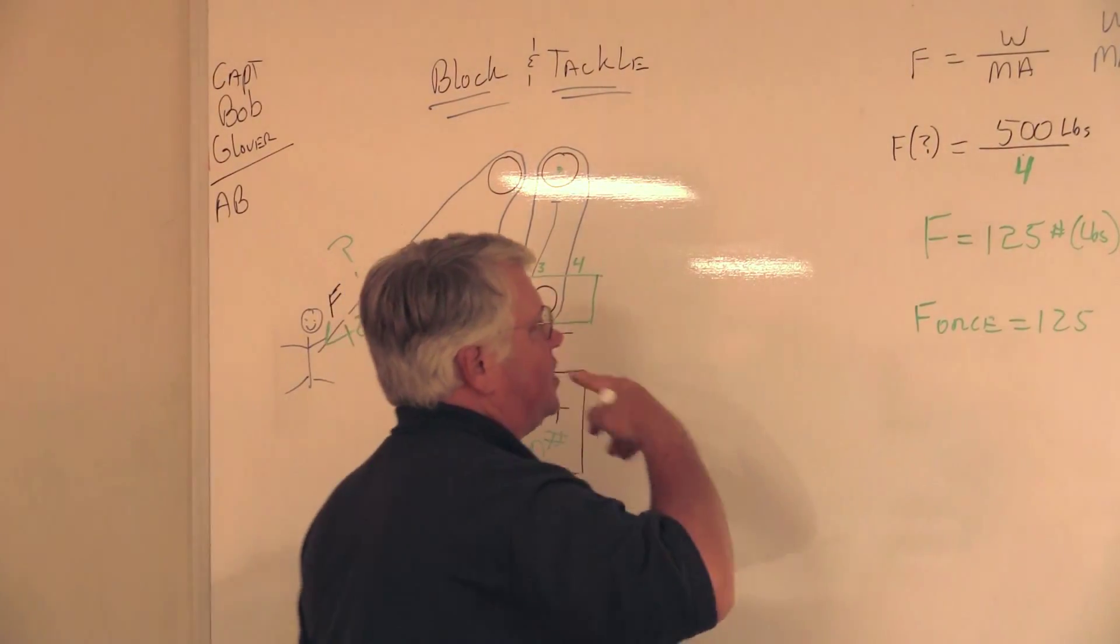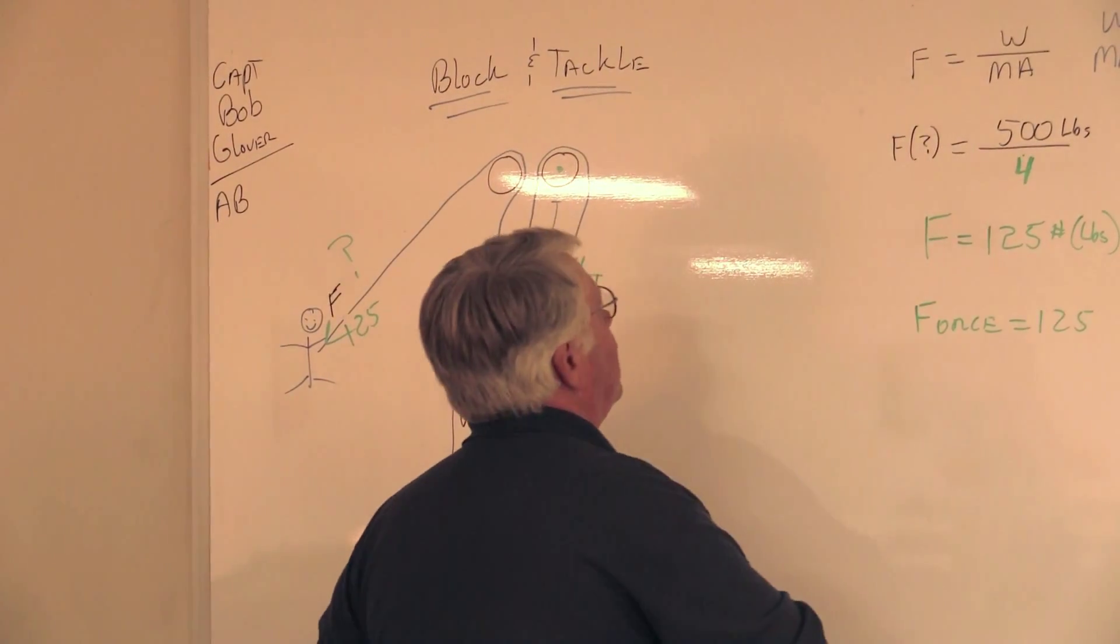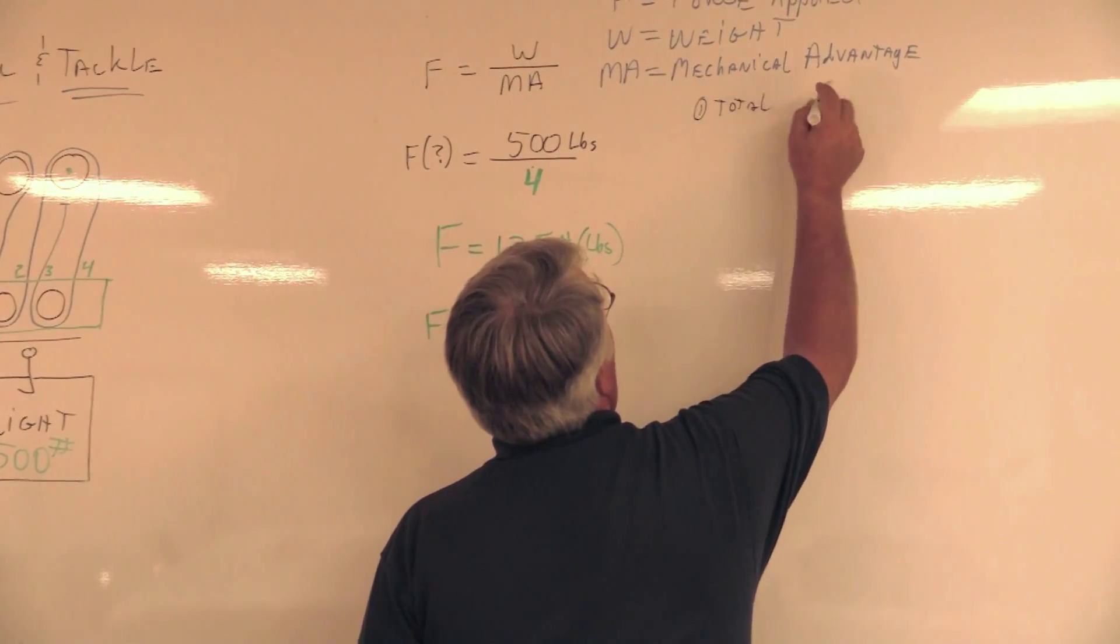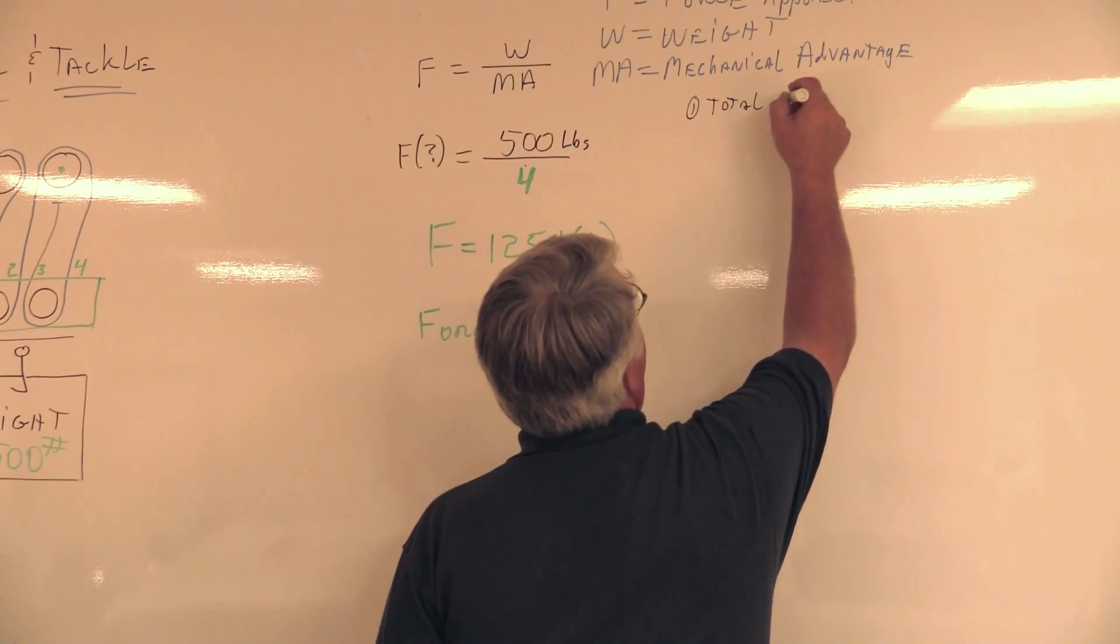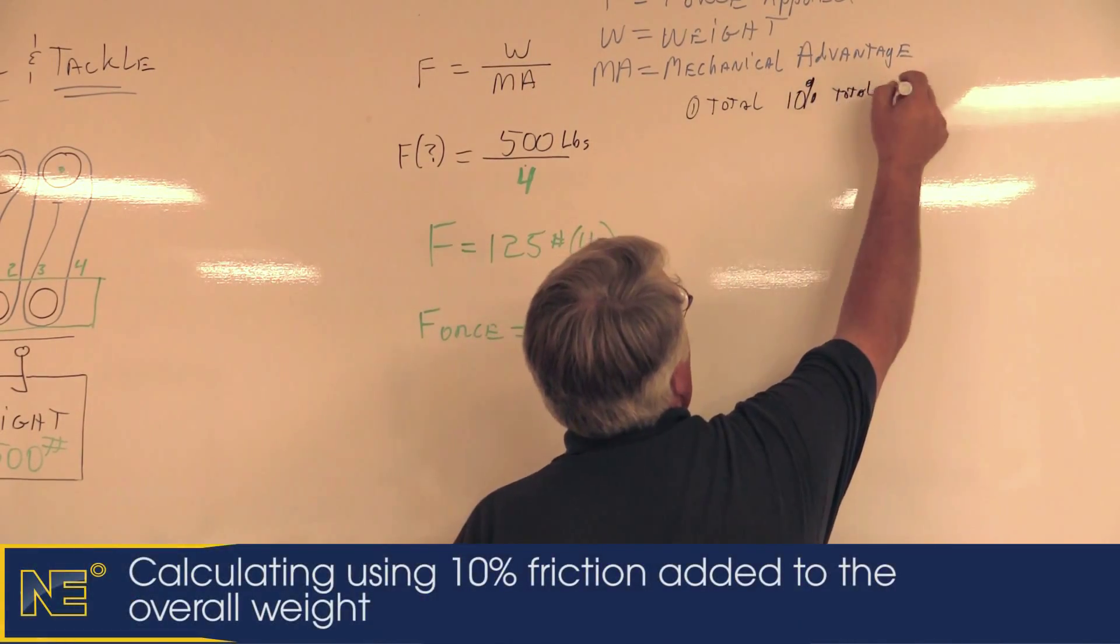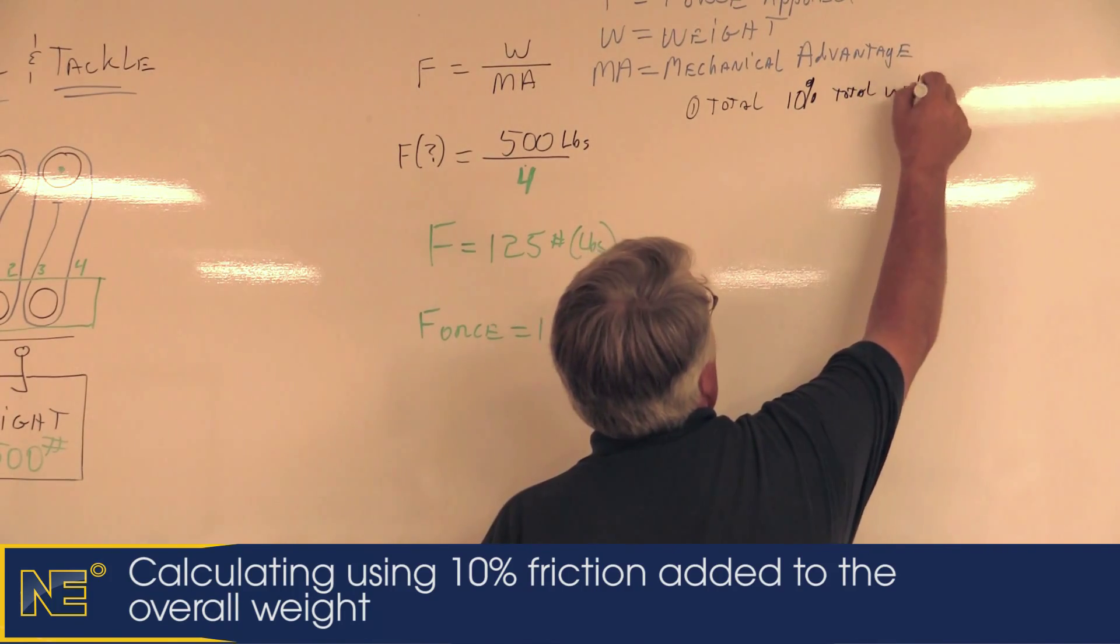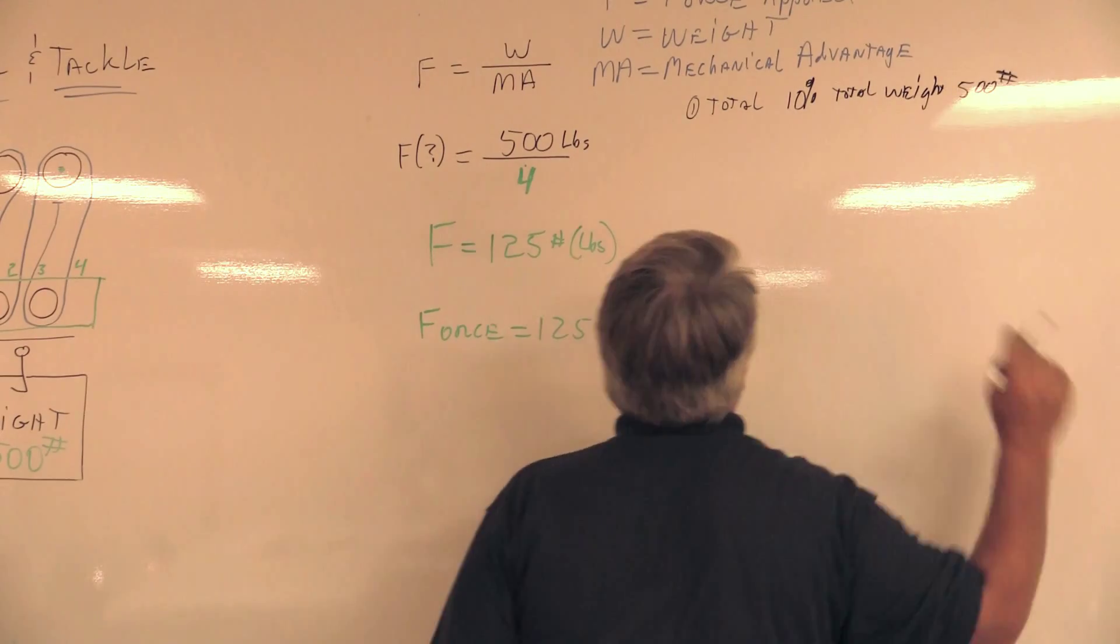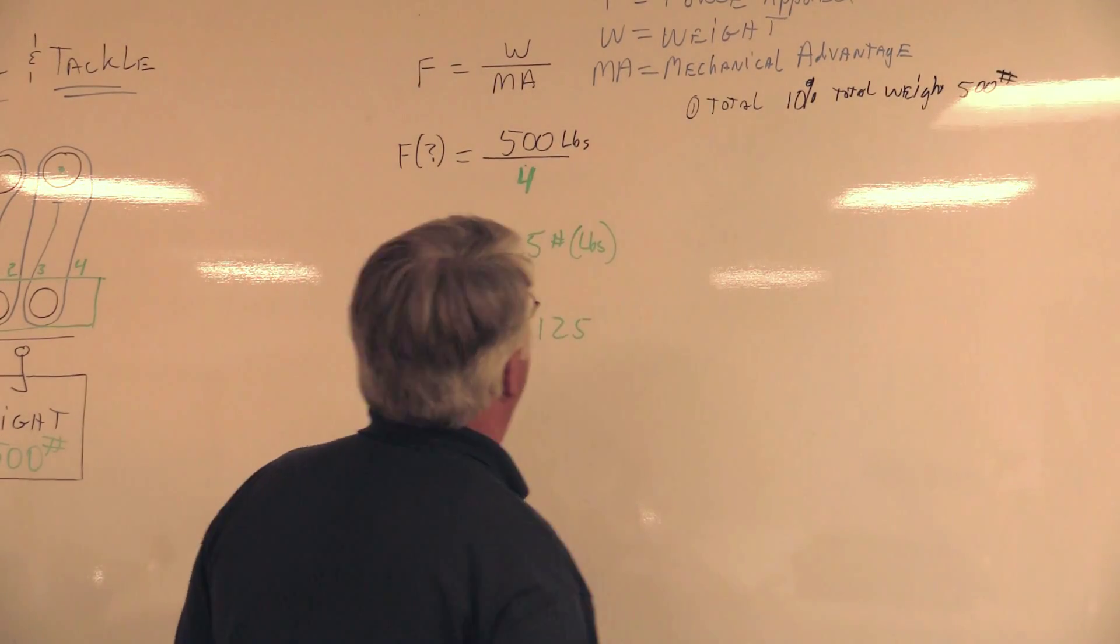What we do is that we're going to take the total weight, and first thing we're going to do is we're going to take 10% of the total weight, OK? Now that weight in this case is what? 500 pounds.